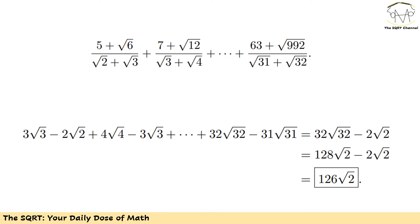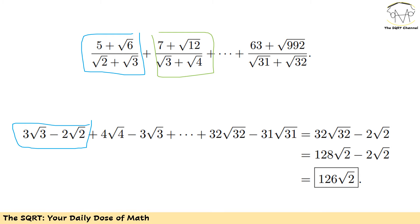So each term in the expression equals b√b − a√a. The first term gives 3√3 − 2√2, the second gives 4√4 − 3√3, and so on up to 32√32 − 31√31. This is a telescoping sum — intermediate terms cancel, leaving 32√32 − 2√2. Since 32 = 2^5, we get 32√32 = 2^5 · 2^(5/2) = 4·√2·16 = 128√2, so the answer is 128√2 − 2√2 = 126√2.